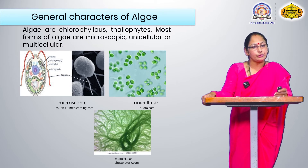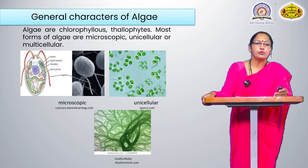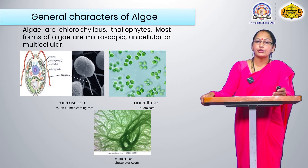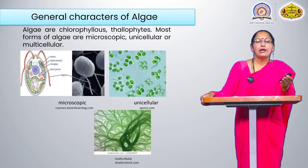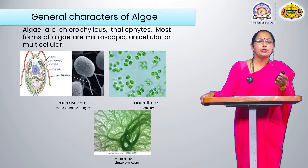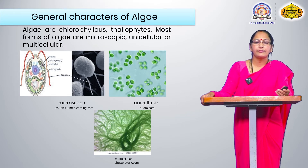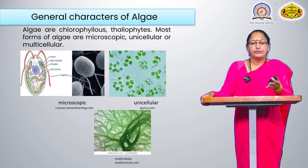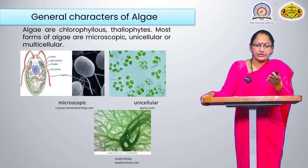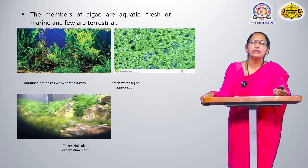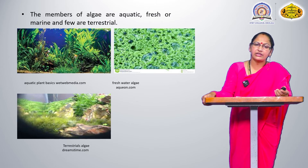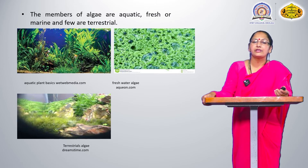Firstly, algae are chlorophyllous thallophytes. Most forms of algae are microscopic, unicellular or multicellular. For example, Chlamydomonas is unicellular and microscopic, while Zygnema or Spirogyra is an example of multicellular algae. The members of algae are aquatic — freshwater and marine — and also a few are terrestrial.